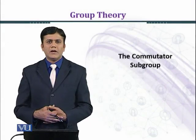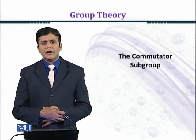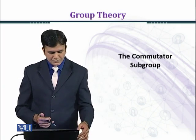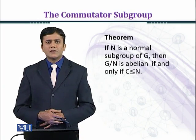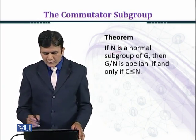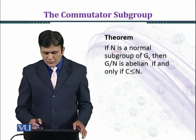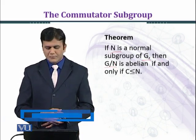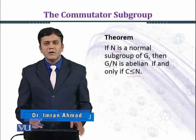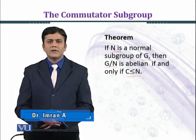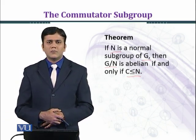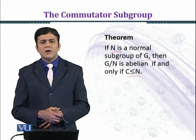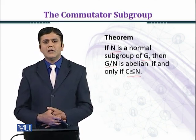In this module we shall discuss the necessary and sufficient condition for when a factor group is an abelian group. The theorem states: if N is a normal subgroup of G, then the factor group G over N is abelian if and only if C is a subgroup of N, where C is the set of all commutators of the form aba⁻¹b⁻¹ and a, b are arbitrary elements of G.